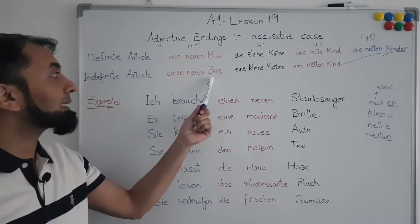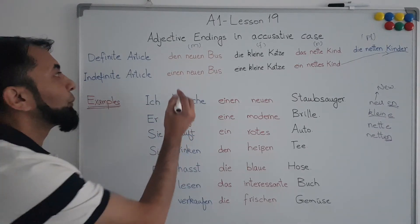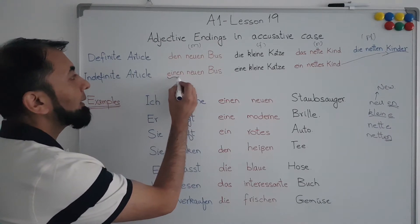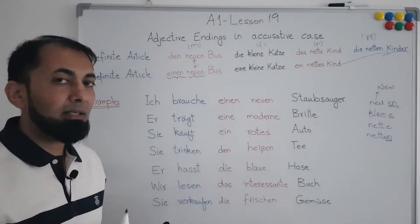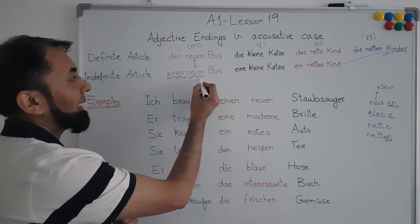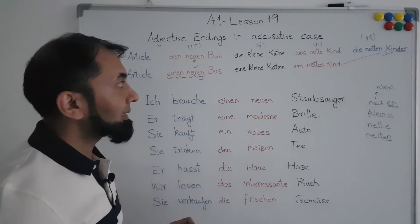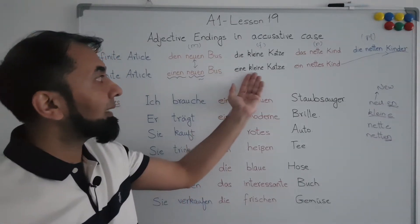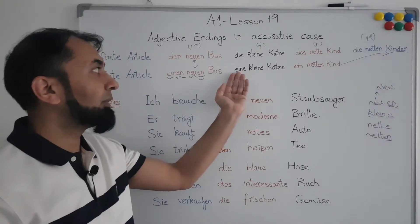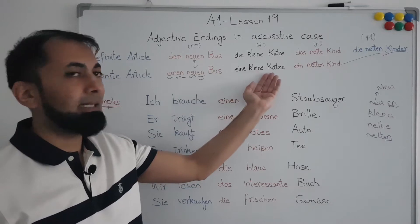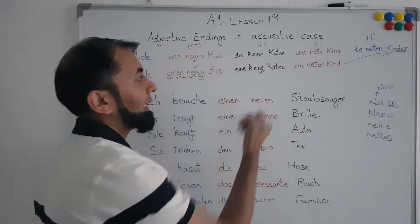Next I have the indefinite articles. To keep things simple, I have taken the same noun 'Bus'. With an indefinite article, we say 'einen neuen Bus', so the adjective still receives '-en' at the end for a masculine noun. Next is 'Katze': without an adjective it is 'eine Katze', but if we add an adjective it becomes 'eine kleine Katze' — a small cat — so we add '-e' at the end of the adjective.